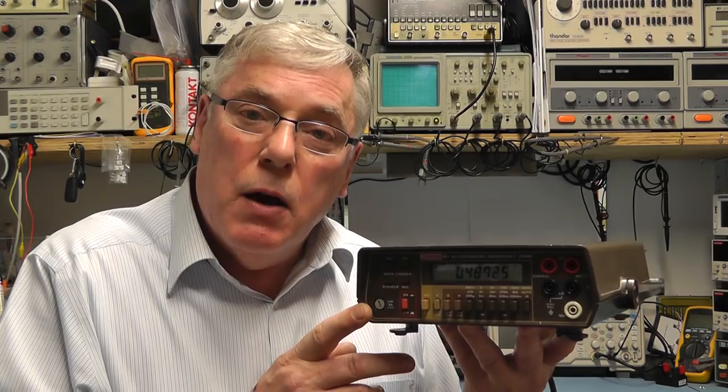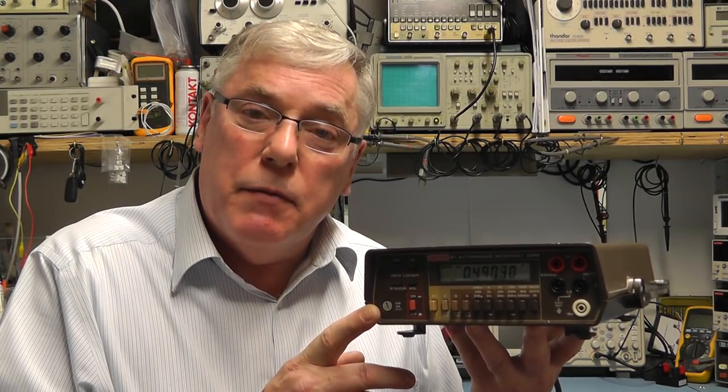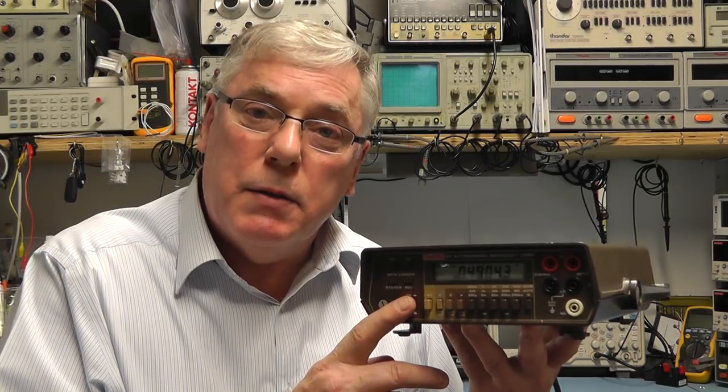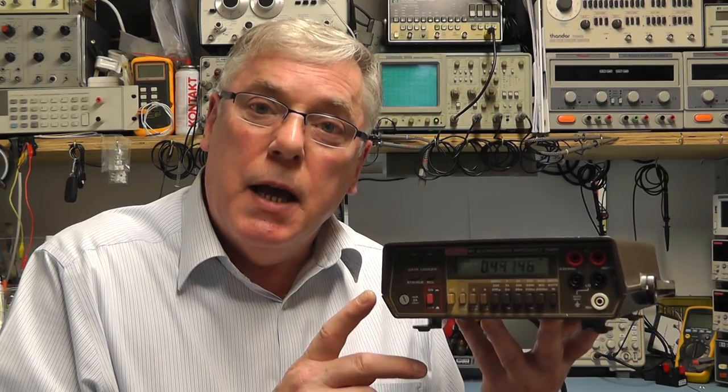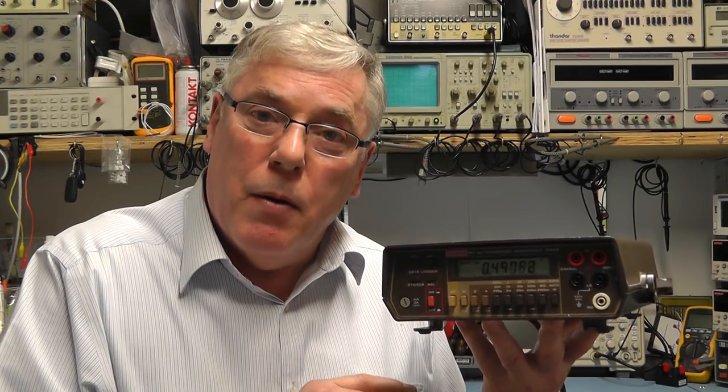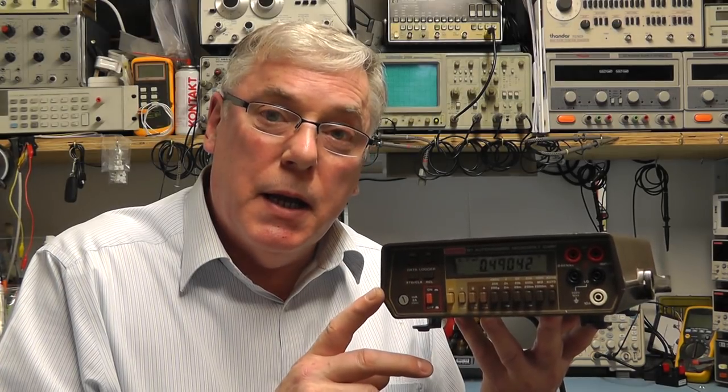This particular one is the 197 but the A version main differences are it has a backlight on the display, the casing color is somewhat different, and it has a connector on the back for the power cord. Other than that the meter is basically identical.